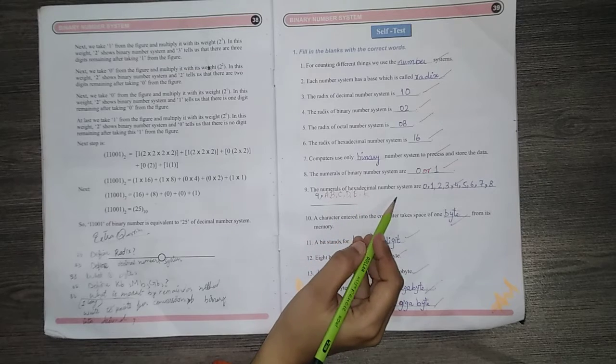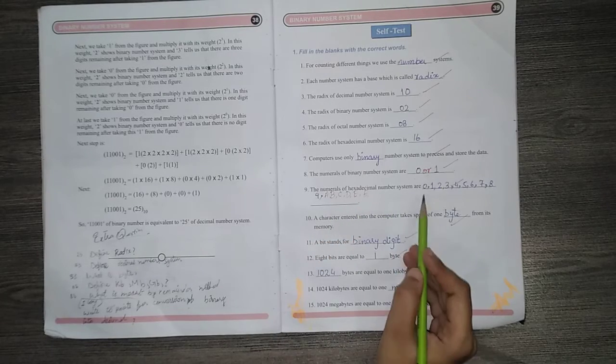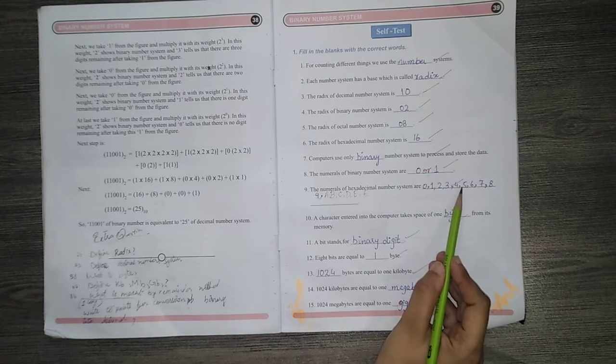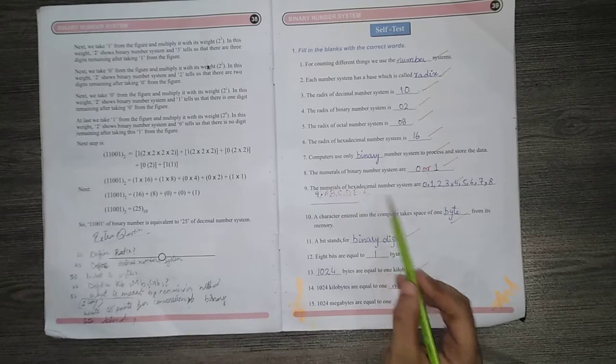Number 9, the numerals of hexadecimal number systems are 0, 1, 2, 3, 4, 5, 6, 7, 8, 9, A, B, C, D, E, F. This is 16.